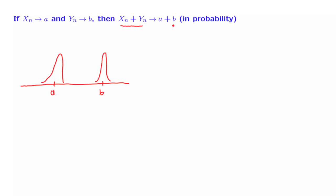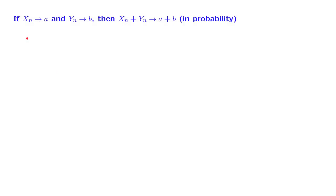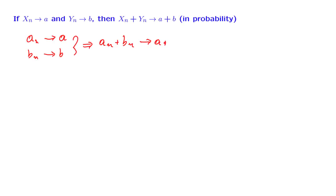Before establishing this statement, however, it will be good practice to verify a property of this type for the ordinary convergence of sequences of numbers, not random variables. What we want to show is that if a sequence of numbers an converges to some number a, and another sequence converges to some number b, then an plus bn converges to the sum a plus b. And we want to do this formally.